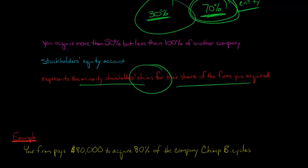I want to show you how you would go about calculating non-controlling interest. Let's say that your company pays $80,000 cash to acquire 80% of another company called Chimp Bicycles. So you pay $80,000 and you get 80% of that company.